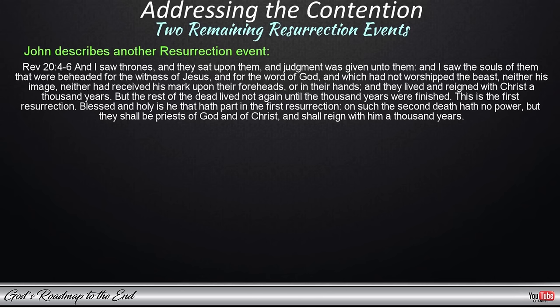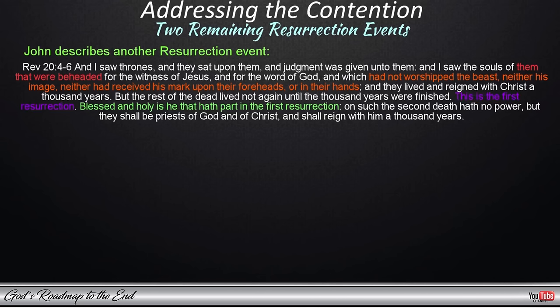John tells us about people who are resurrected and positioned on thrones with Jesus, just as we have seen in the case of the twenty-four elders mentioned in Revelation 4, and these also reign with Jesus a thousand years. There are very specific qualities unique to this group: they were all beheaded for the witness of Jesus and for the word of God, and they did not worship the beast or take his mark. The reader is told that those who form part of the first resurrection are blessed and holy, which implies this group marks the conclusion of this harvest — the gleanings of the first resurrection — and represent the outer court of God's temple.